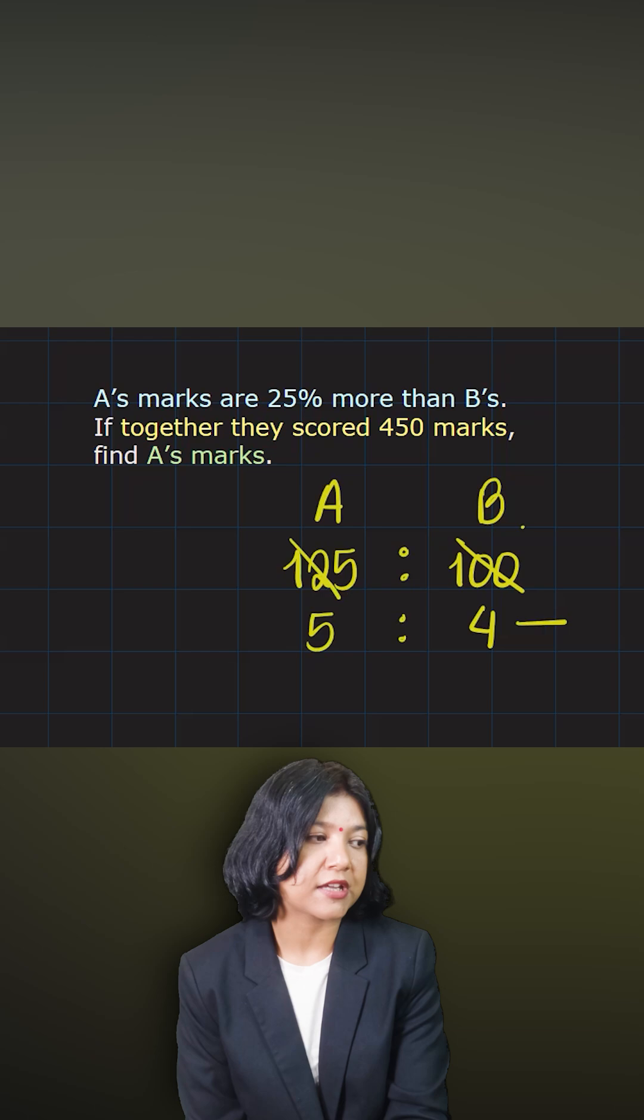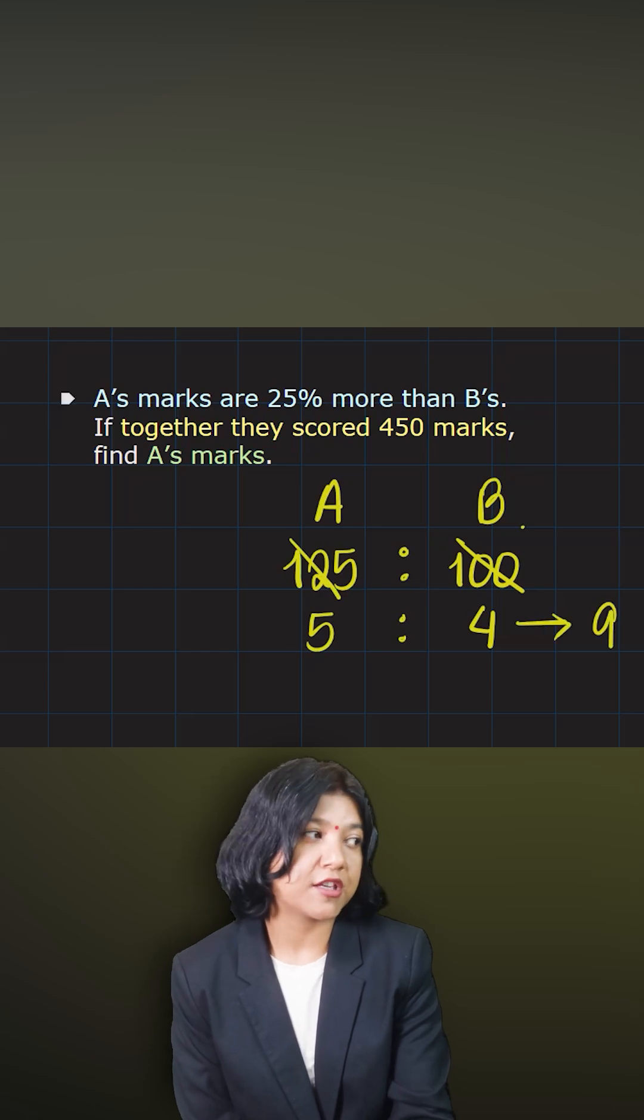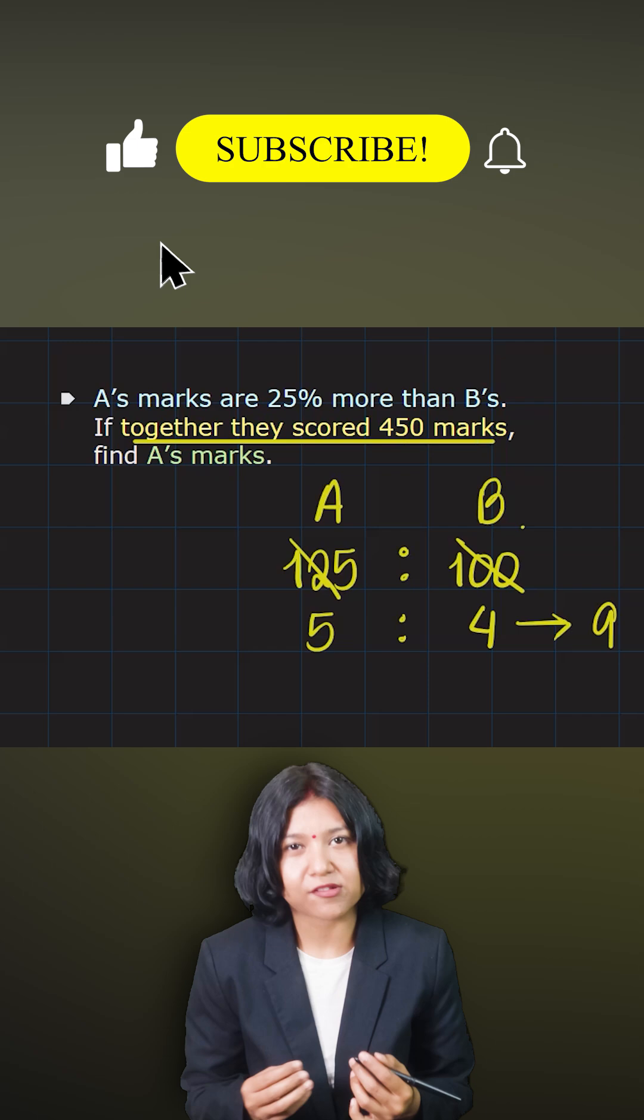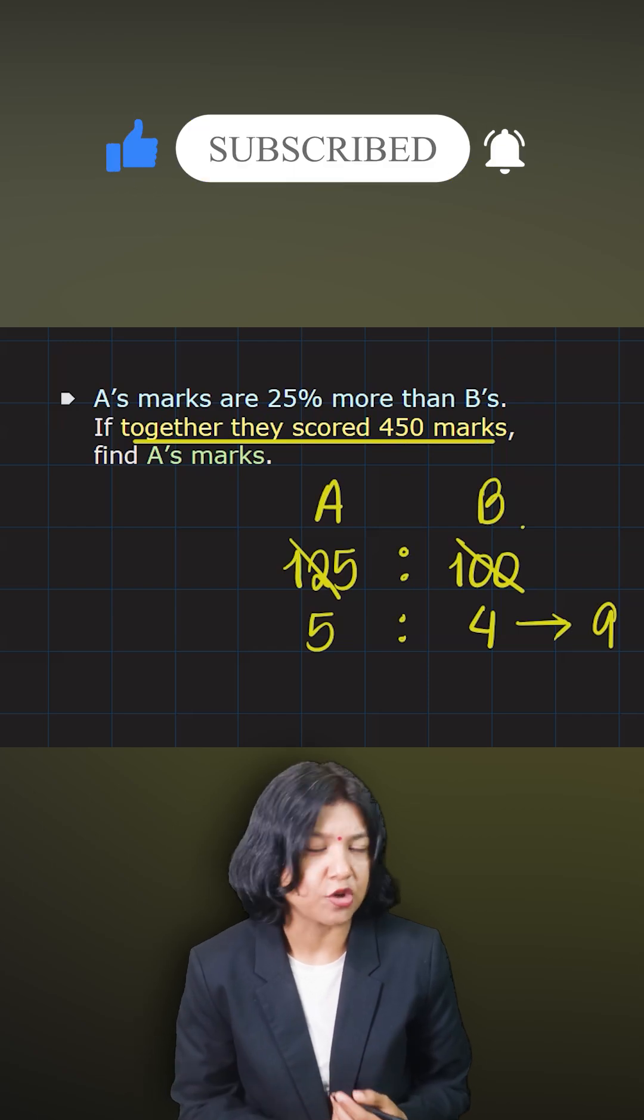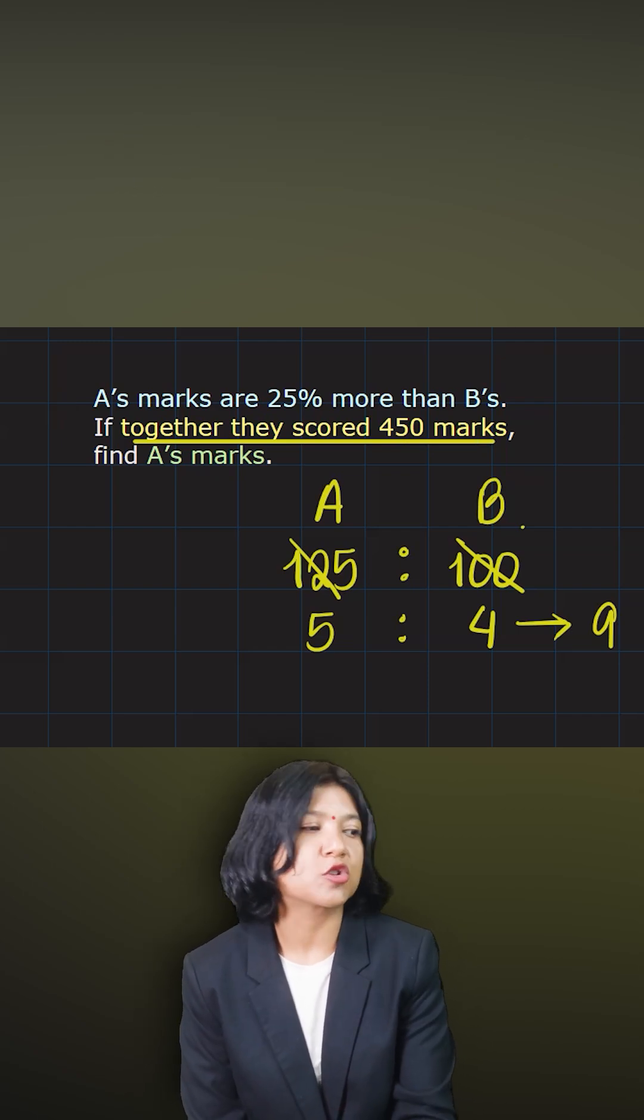So the total of ratios here now becomes 9. And they have given you the information about together what they scored. So they scored 450 marks in total together. So you have the total of ratios.